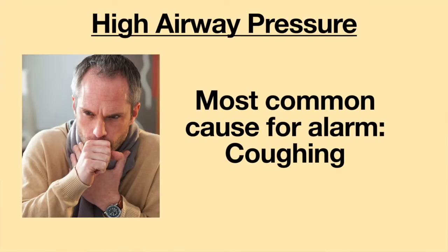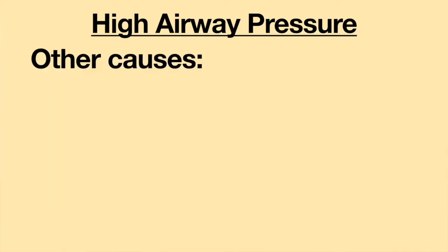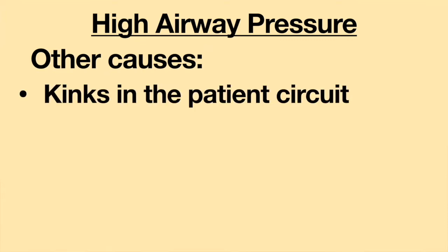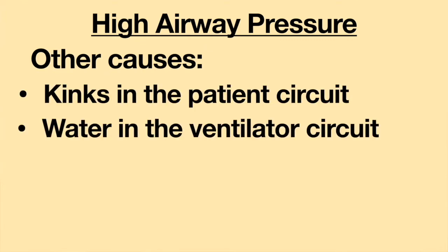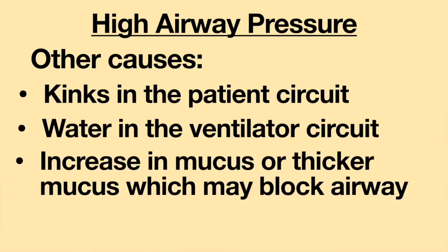The most common cause of a high airway pressure alarm is the spike in airway pressure produced when a patient coughs. This is almost always self-limited and requires no intervention. Other causes of high airway pressure include kinks in the patient circuit, water in the ventilator circuit, an increase in mucus or thicker mucus which may block the airway, and gagging.